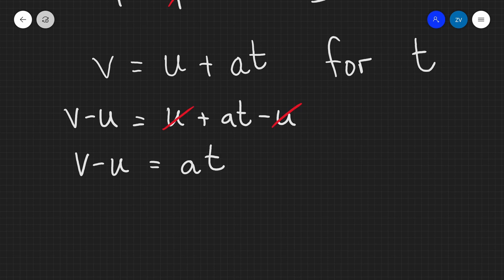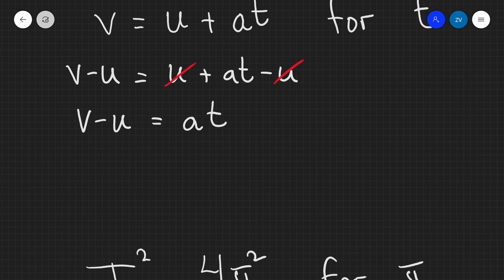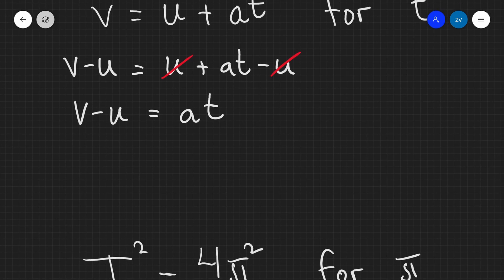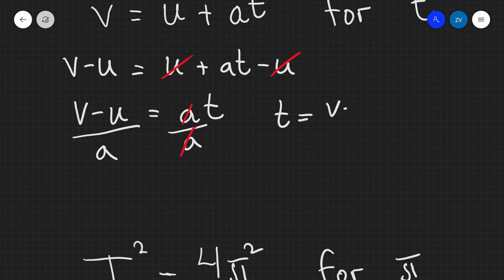Now, as you get more and more confident, you're going to start seeing those things instantly. For instance, just right over here, I need to divide both sides by A in order to essentially cancel out the A's on this side. And what I'll be left with is just T. So, I'm dividing both sides by A. And what I'm left with is the following expression that T is equal to V minus U divided by A.